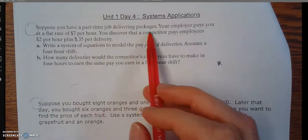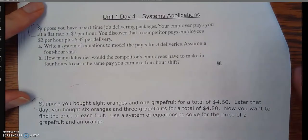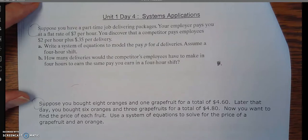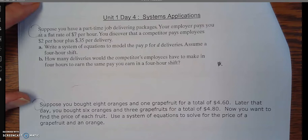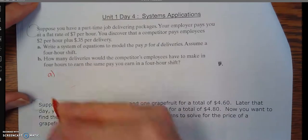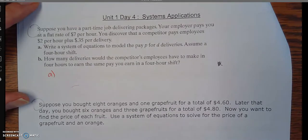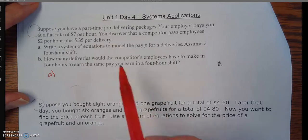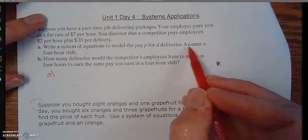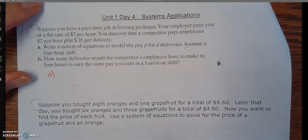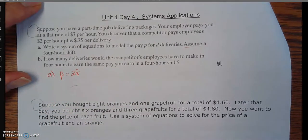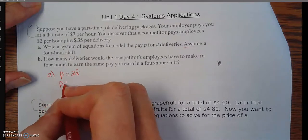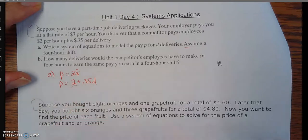To start out with this, suppose you have a part-time job delivering packages, maybe a UPS guy or FedEx or post office and your employer pays you at a flat rate of $7 per hour. Discover that competitor pays employees $2 per hour, so it's not quite as good pay, but you do get paid per delivery. So if you have more deliveries, then you can make more money possibly. For part A, we're supposed to write a system of equations to model the pay, P, for deliveries. If you notice in here, there's pay, there's deliveries, and there's hours that can vary. So we're going to narrow it down to just say you have a four-hour shift, just to make it simple. So for you, where you work, you get paid $7 an hour. So if you worked for four hours, that'd be $28.